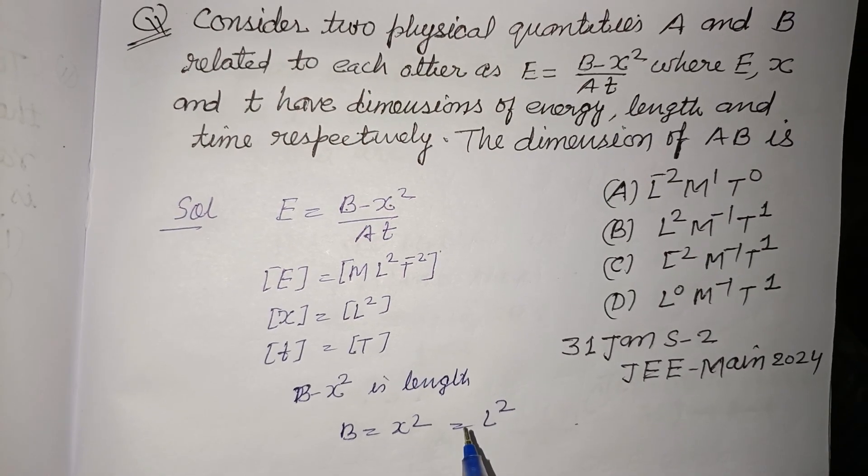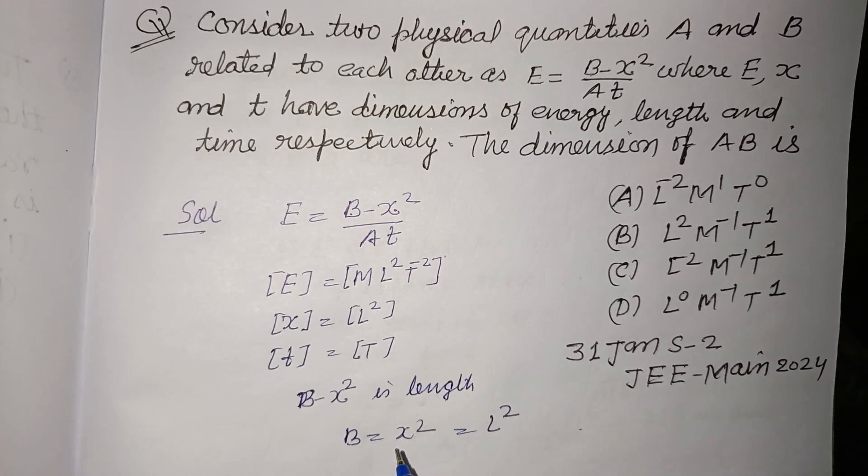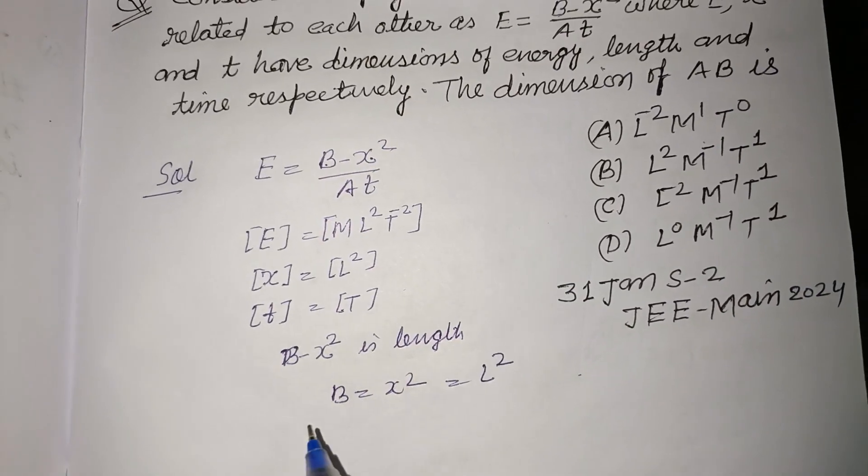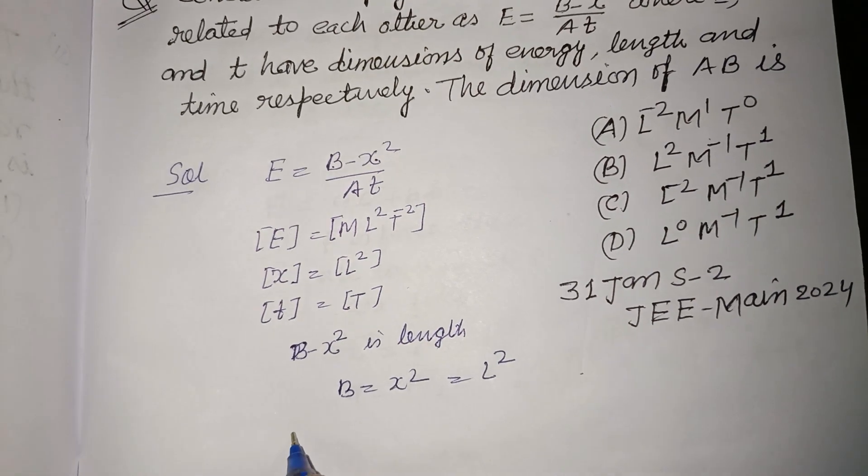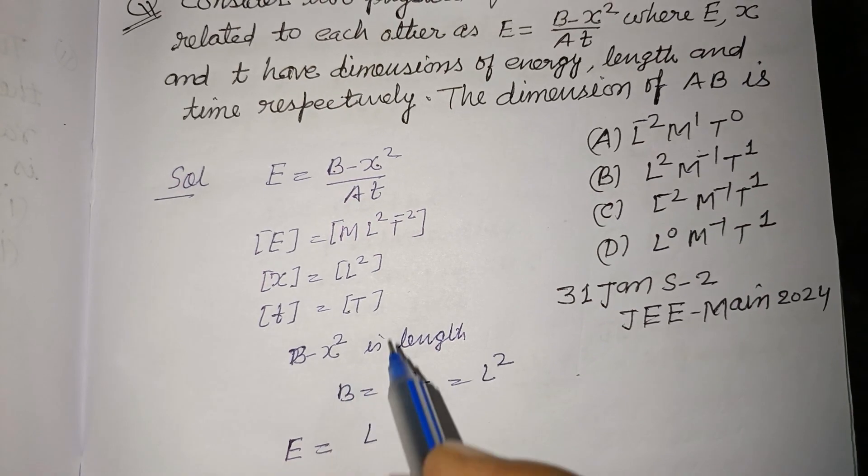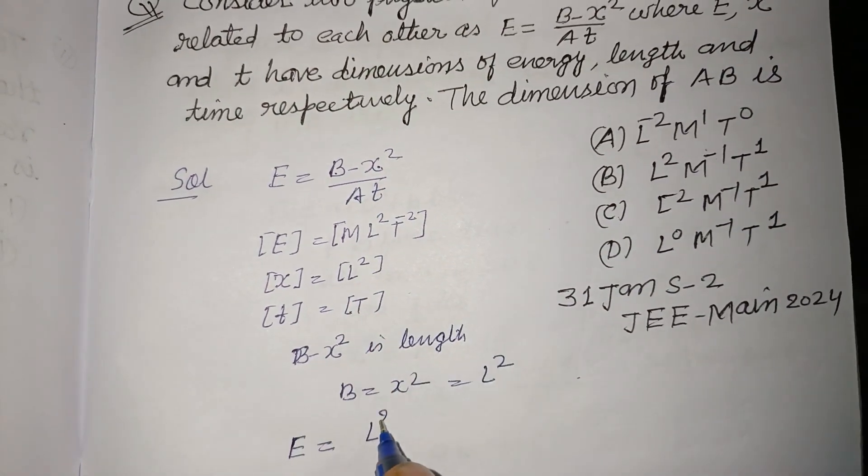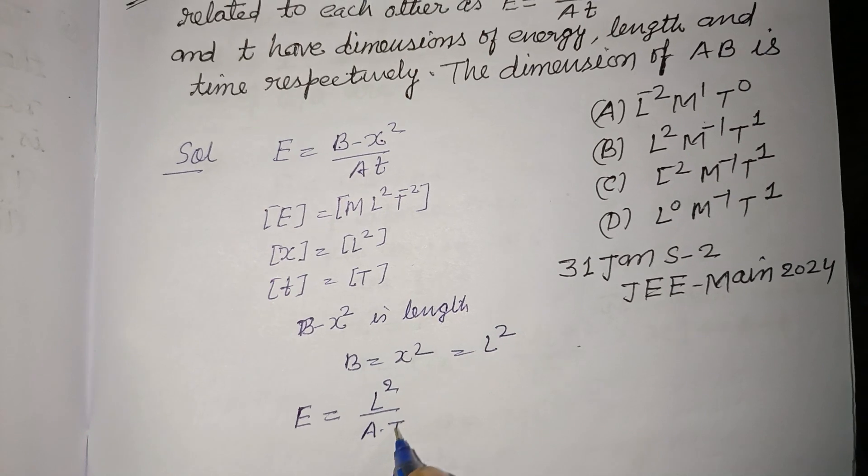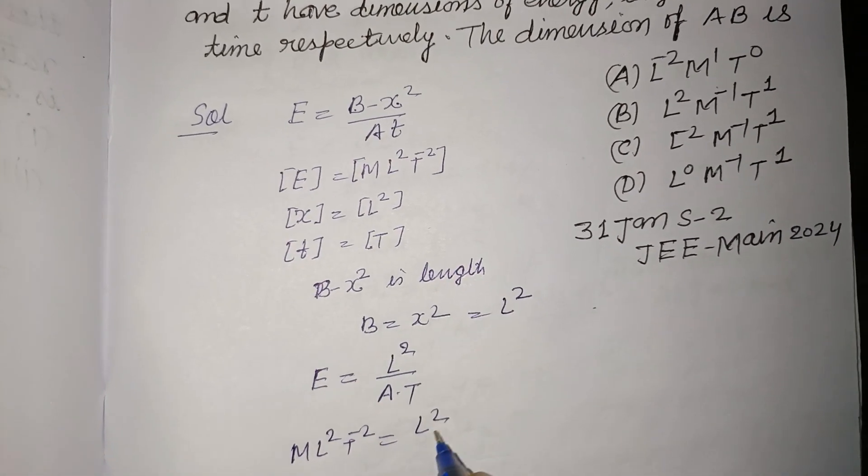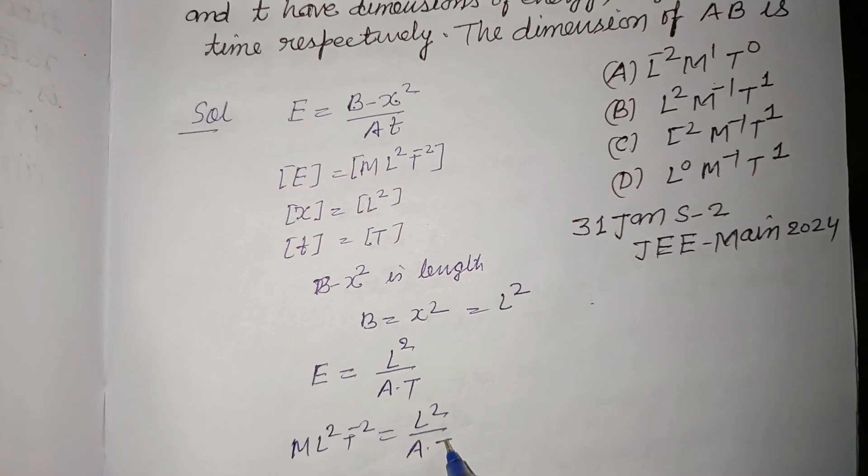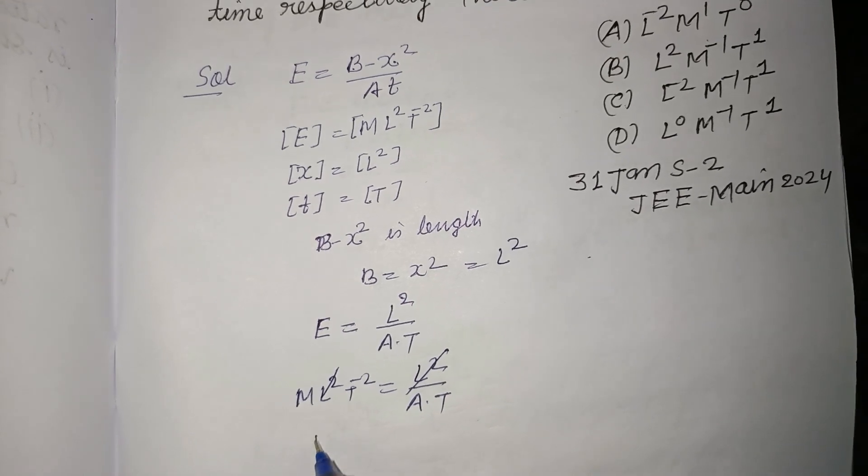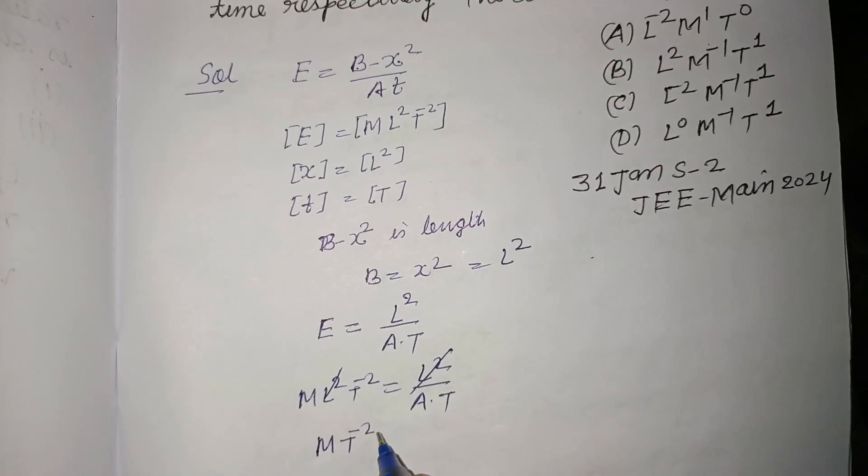Now we got E is the dimension of energy and dimension of this part (B - x²) is L² over At. E is ML²T⁻² and this is L² over At. So L² cancels, we got MT⁻² into T.